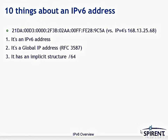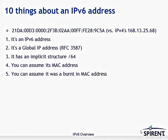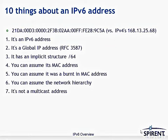It has an implicit structure: the top 64 bits are for network and the bottom 64 bits are for host — or interface, as IPv6 calls it. You can assume that its MAC address is embedded in its interface portion because there's an FFFE in the middle, suggesting an EUI-64 derived address. You can also assume the network hierarchy from its implicit structure. It's definitely not a multicast address — it doesn't start in FF. It's also not a link-local address — it doesn't start in FE80.